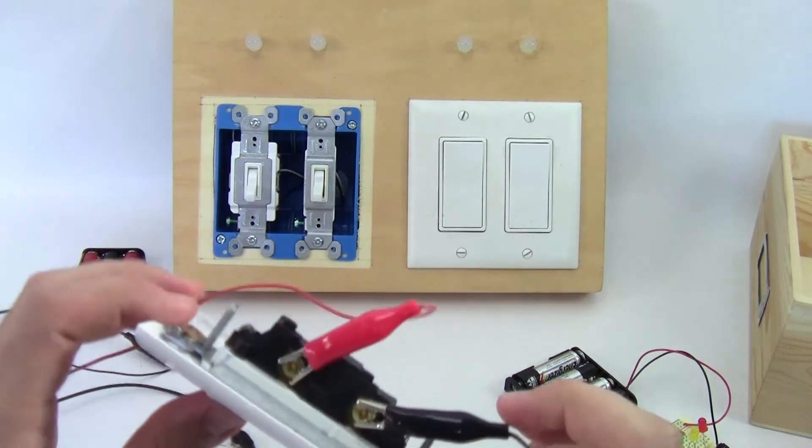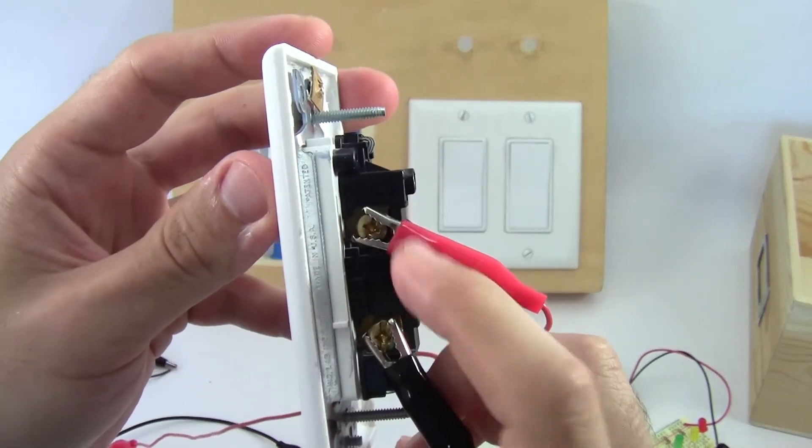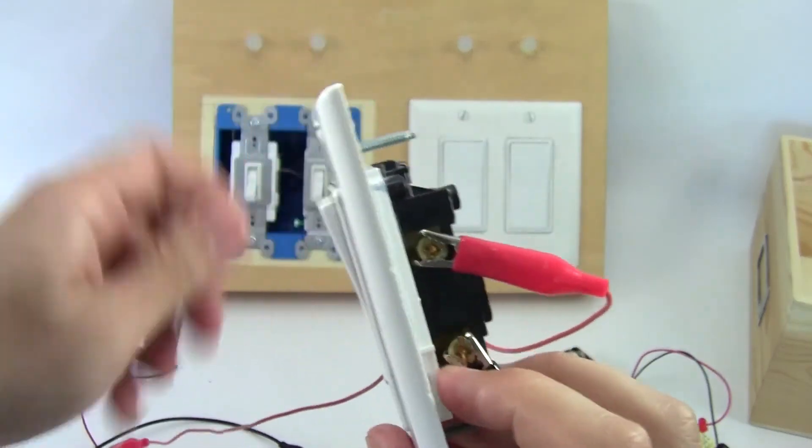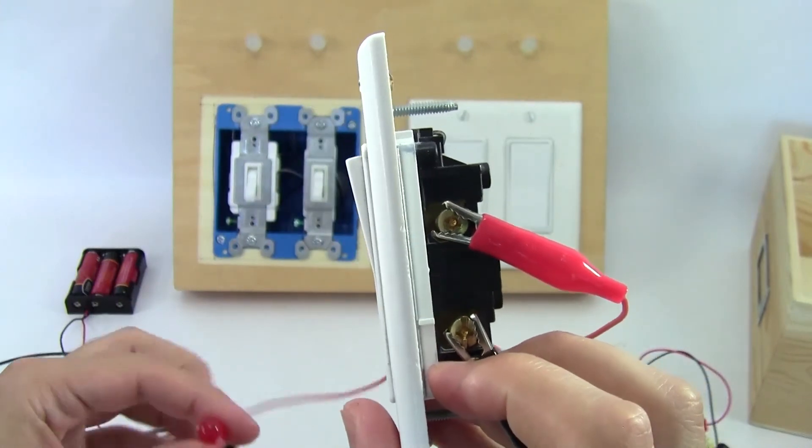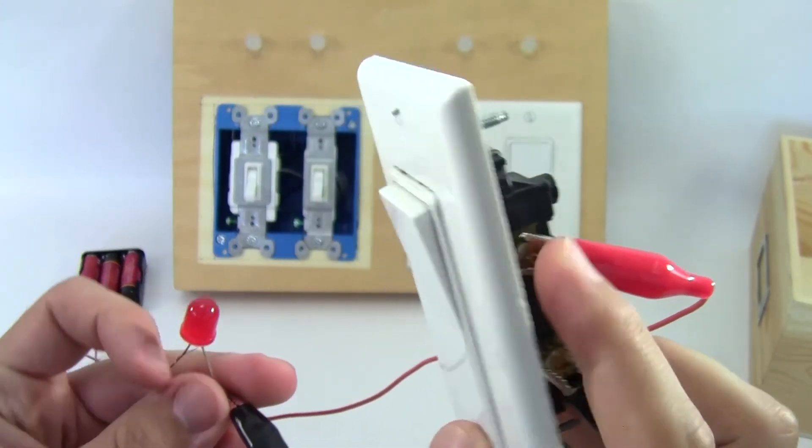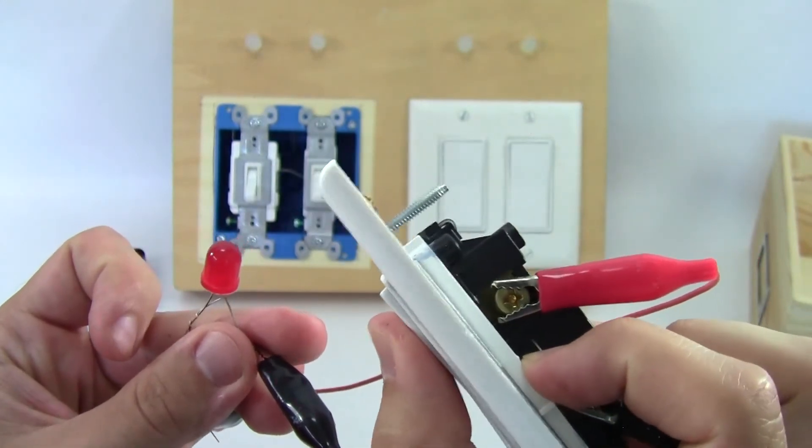you are attaching it to a regular light switch, which has these two screws on the side. And again, you can use hookup wire and twist it to those. I've just used alligator clips as a temporary connection here. So when I turn this switch on, that turns the LED on.